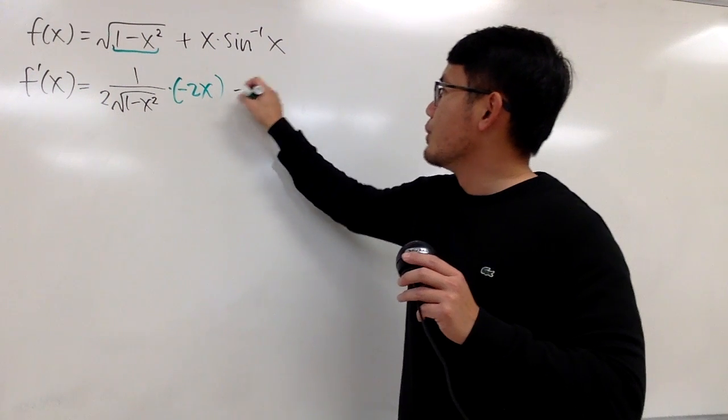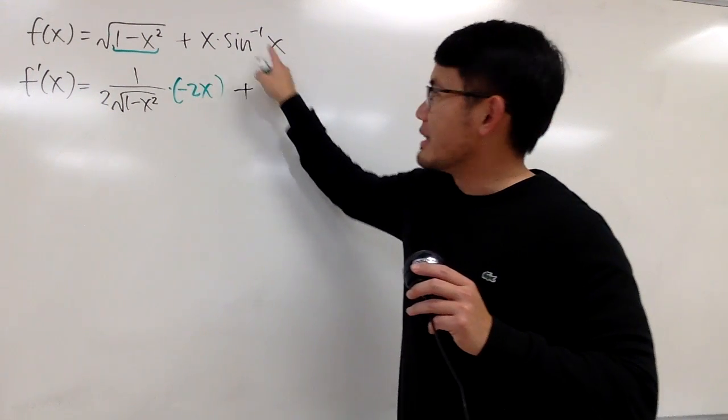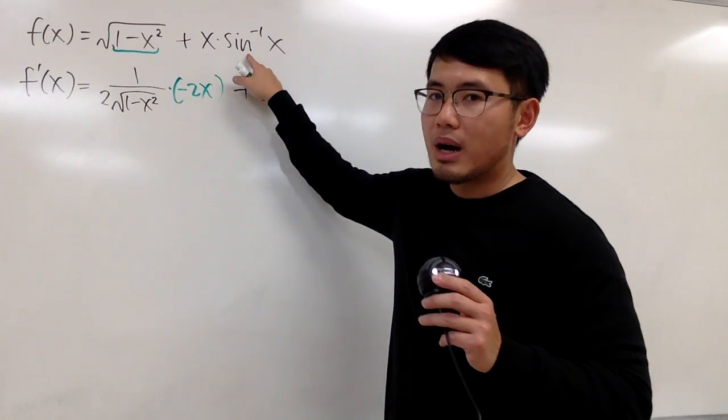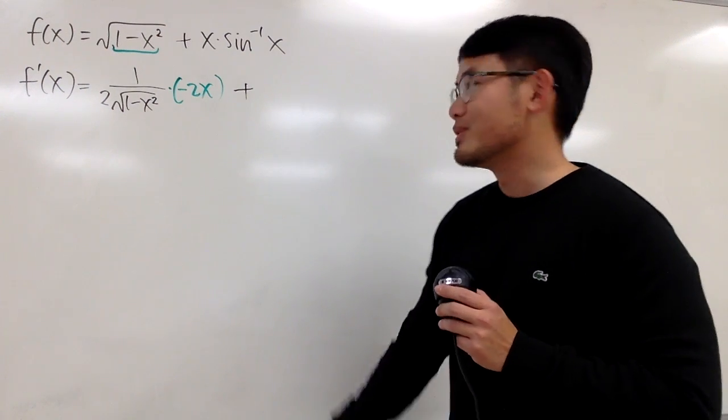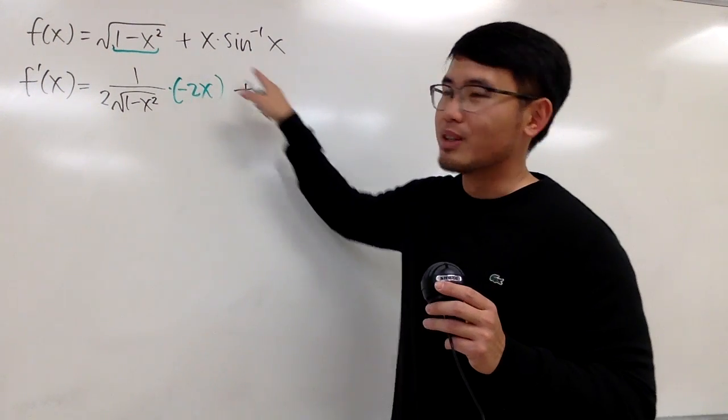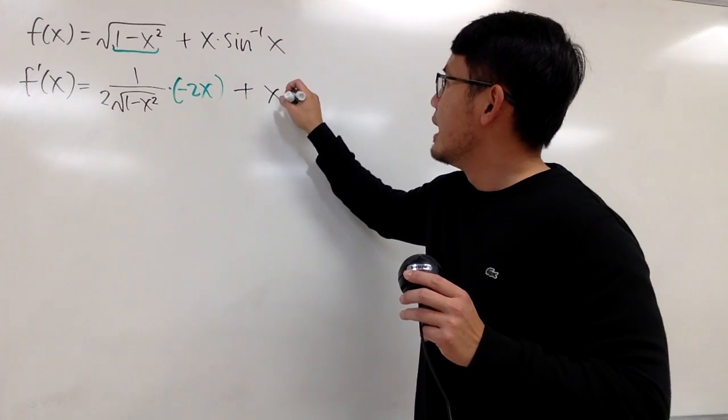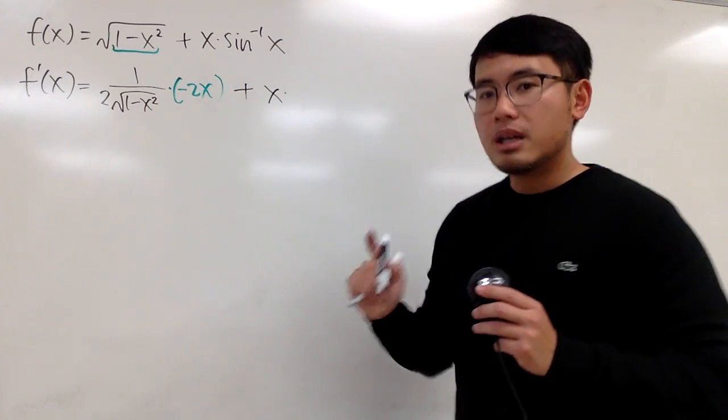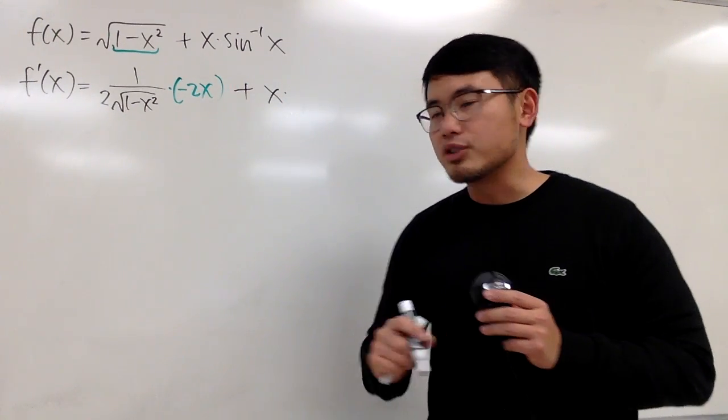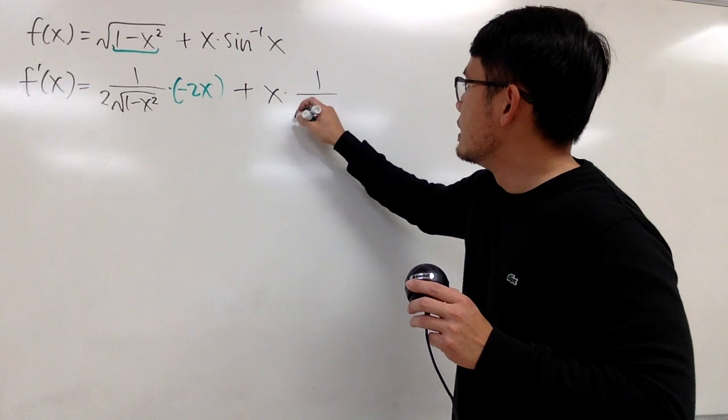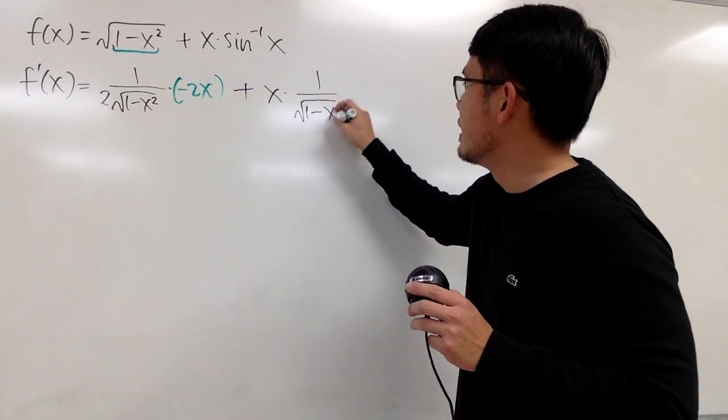Moving to the second one, we are going to add, but here, we have to use the product rule. So, to do that, we are going to keep the first function, which is x, and we multiply by the derivative of the second, and the derivative of inverse sine function is 1 over square root of 1 minus x squared.